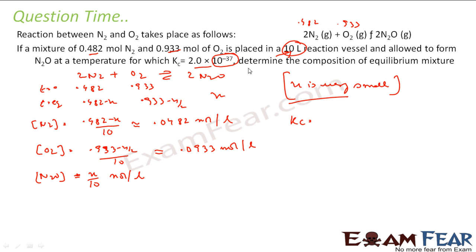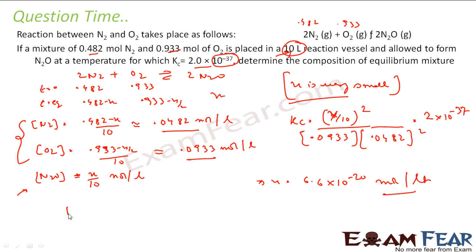So with this, if you find Kc, Kc will be concentration of N2O to the power 2, that is x by 10 to the power 2, divided by concentration of O2 - O2 is 0.0933 mol per liter - and then concentration of N2 to the power 2, that is 0.0482 to the power 2. And this value is given as 2 into 10 to the power minus 37. So if you solve this equation, you will get the value of x to be 6.6 into 10 to the power minus 20 mol per liter. And that is the composition of N2O. Other thing composition, I am assuming it to be same. Only N2O composition was something which is not known now. It will be x by 10. So you divide this by 10 and that will become the concentration of my N2O.